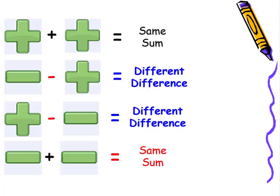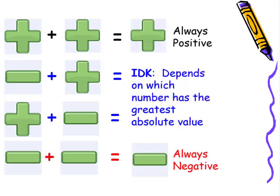A second way to look at adding integers: if the signs are the same, we find the sum — same, sum. If the signs are different, we find the difference — different, difference. Sum means addition; difference means subtraction. And the third way: when adding two positive numbers, you'll always end up with a positive. When adding a negative to a positive or a positive to a negative, the sign of the sum or difference depends on which number has the greatest absolute value.